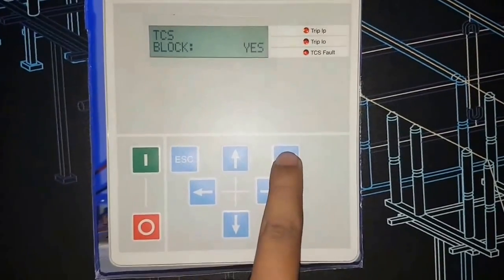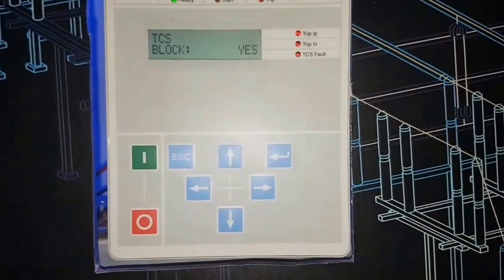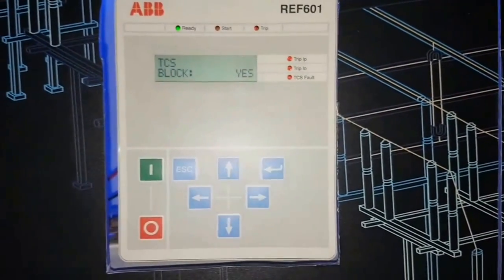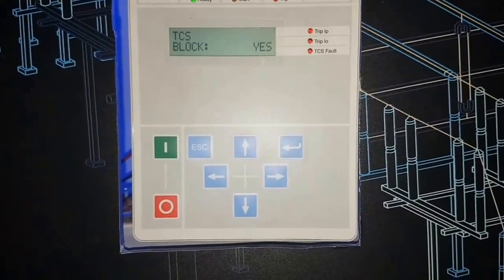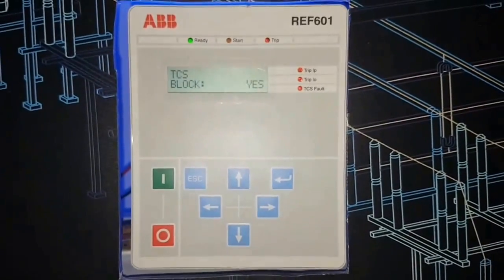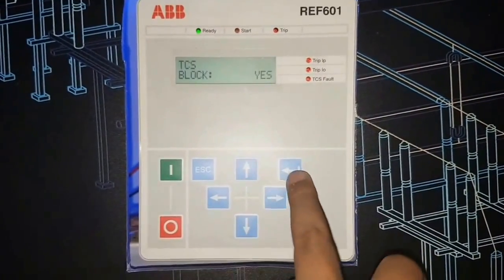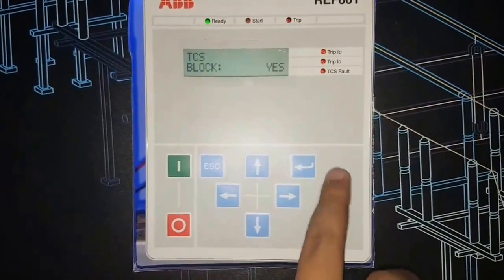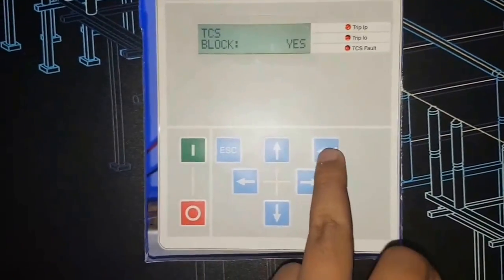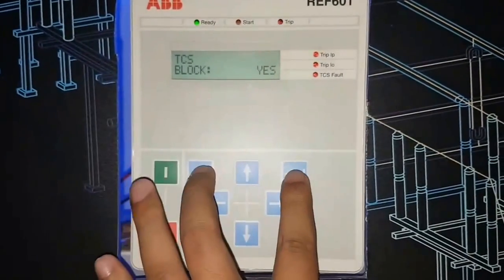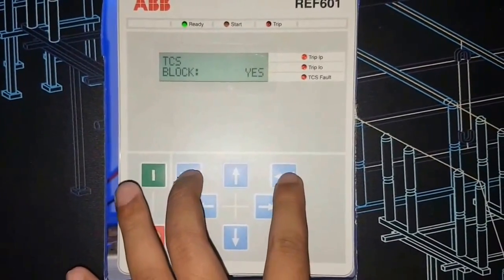This enter button to change any setting. For any setting like the CT ratio check setting, or the current low setting, or instantaneous current setting. For that I have to use this for edit or changing any data. I have to use this enter button. But for this REF601, only these two buttons will be used.